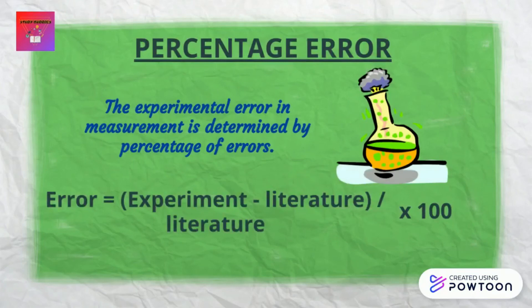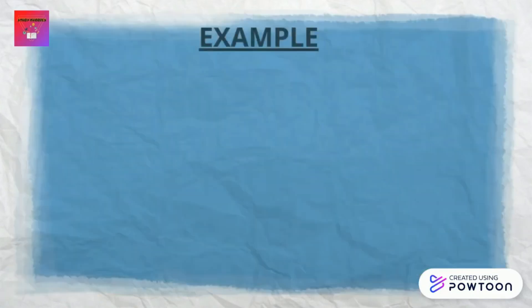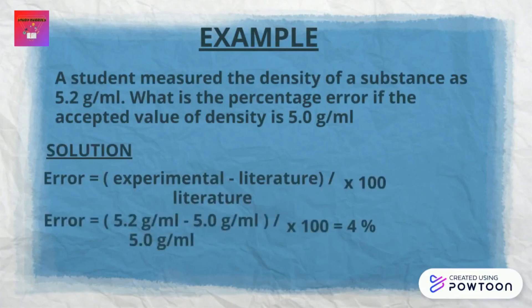Next is percentage error. The experimental error in measurement is determined by the percentage error. The formula is: percentage error equals the experimental value minus the literature value, divided by the literature value, multiplied by 100. For example, a student measured the density of a substance as 5.2 g/mL. What is the percentage error if the accepted value is 5.0 g/mL? The experimental value is 5.2 g/mL and the literature value is 5.0 g/mL. Solving the equation gives the final percentage error answer.